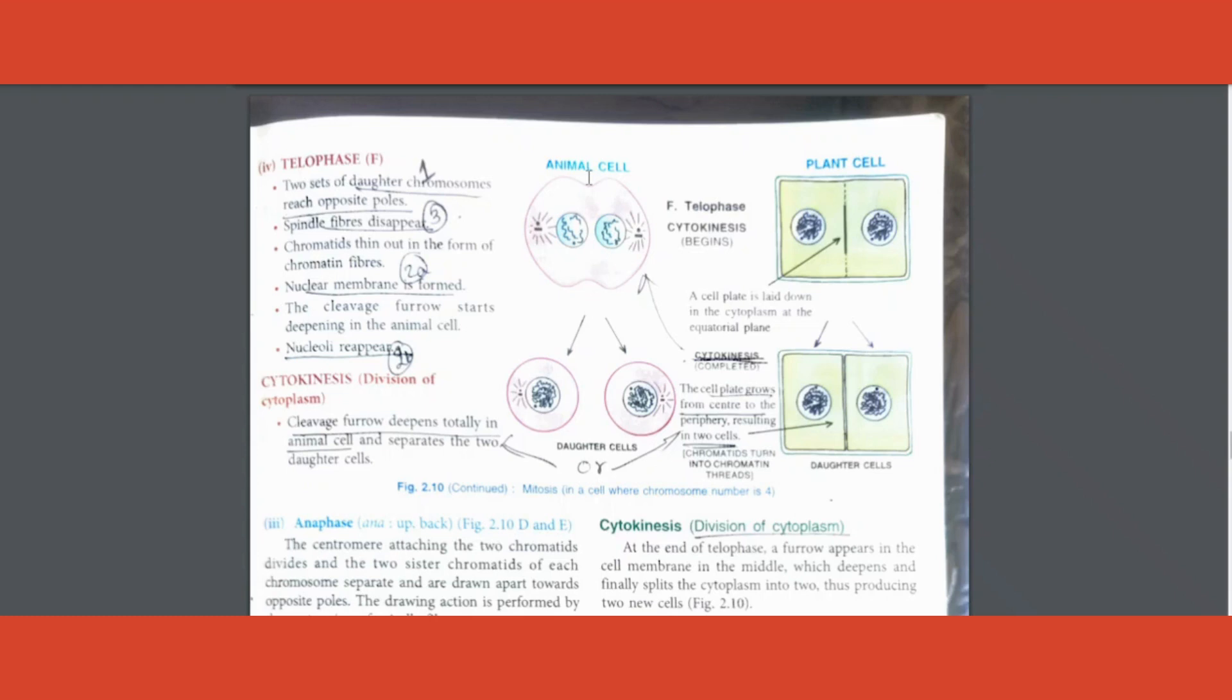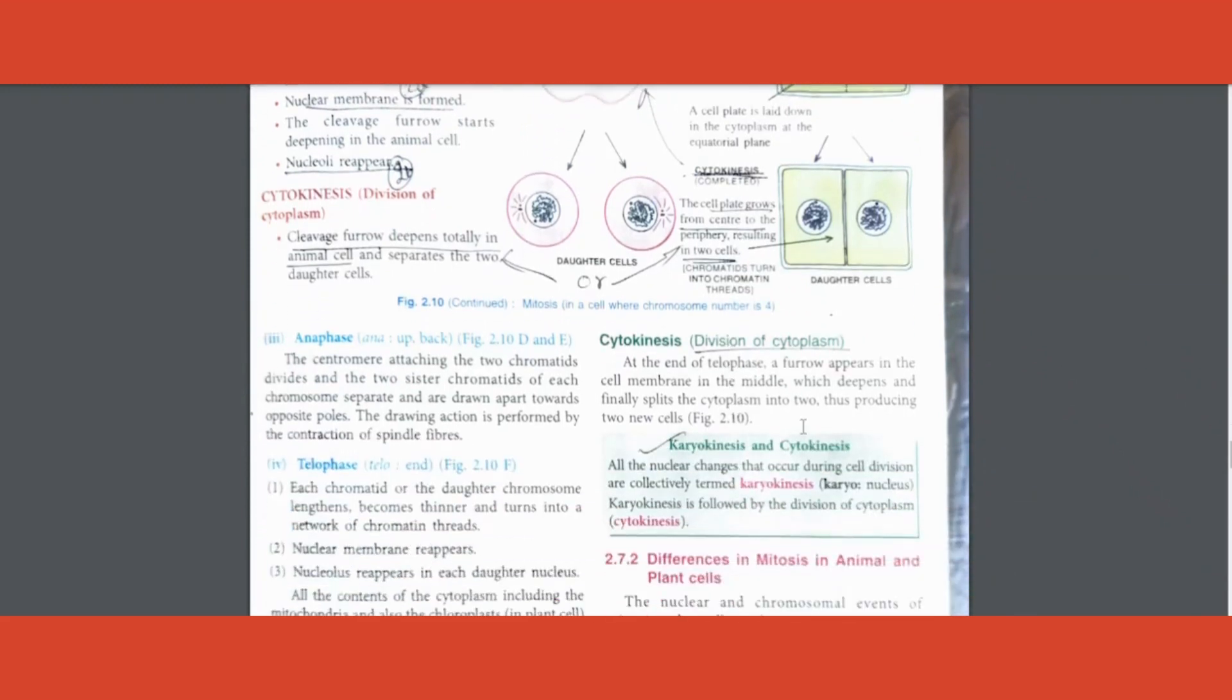In animal, cytokinesis furrow is formed from periphery to the center. In case of plant it's the other way around - there is no furrow formed, instead a cell plate is formed in the center, then it starts moving towards the periphery. Opposite movement, center to periphery. This much you write, you get that two marks where they ask you to differentiate between cytokinesis in plant and animal.